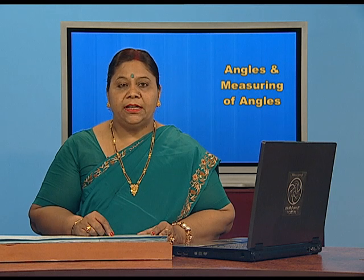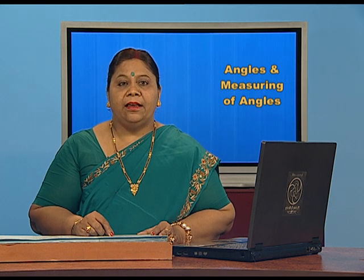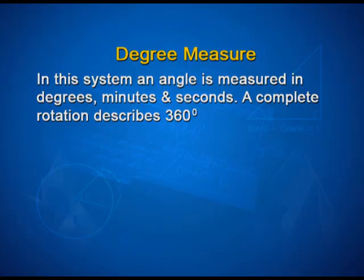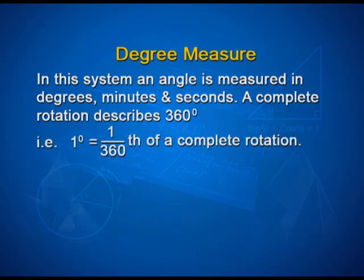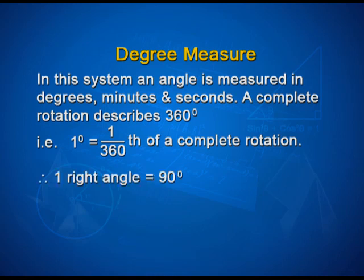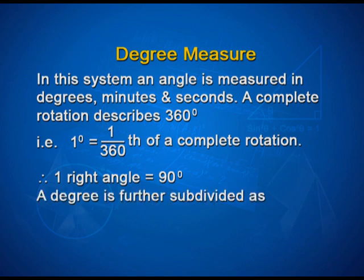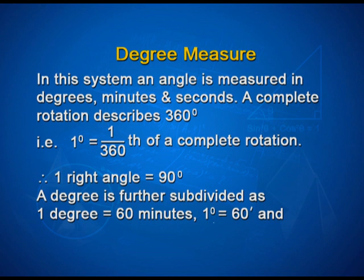We shall discuss about the systems of measuring angles. Firstly, degree measure. In this system, an angle is measured in degrees, minutes, and seconds. A complete rotation describes 360 degrees. That is, 1 degree is equal to 1/360th of a complete rotation. Therefore, one right angle is equal to 90 degrees. A degree is further subdivided: 1 degree is equal to 60 minutes.